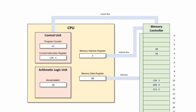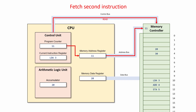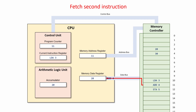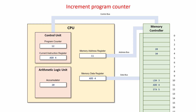To fetch the next instruction, the contents of the program counter are copied into the memory address register. This is then copied to the memory controller via the address bus, and a read instruction is issued by the control unit. The second instruction is placed on the data bus and copied into the memory data register, replacing what was already there. And from there, because it's an instruction, it's copied into the current instruction register. The program counter is incremented.